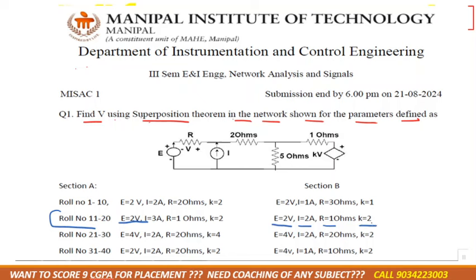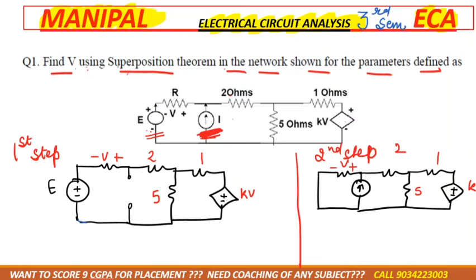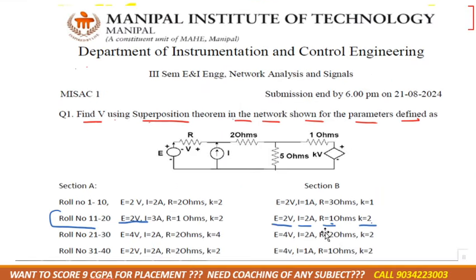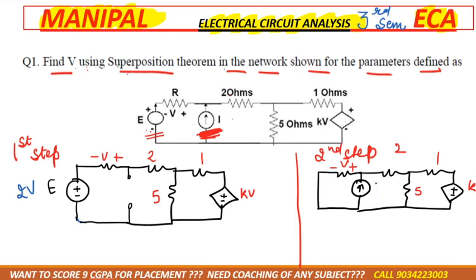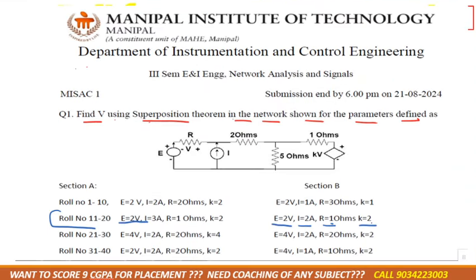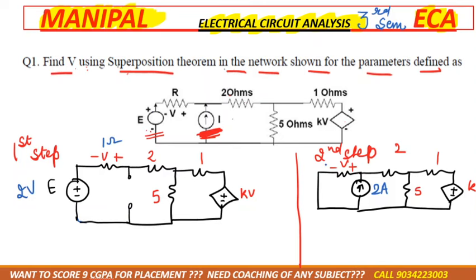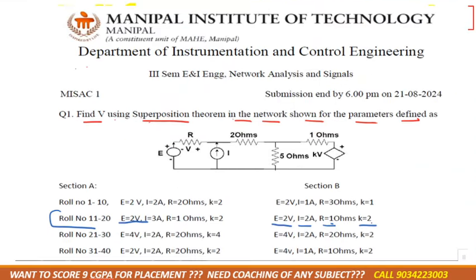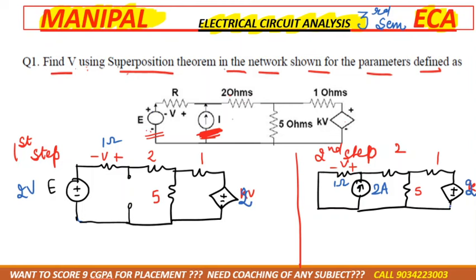So e = 2 volts, i = 2 amperes, r = 1 ohm, and k = 2, making the dependent source 2v. In step one, we mark the current as i-dash. In step two, we mark the current as i-double-dash. The final answer for v is obtained as v-dash plus v-double-dash. From step one we get v-dash, and from step two we get v-double-dash.